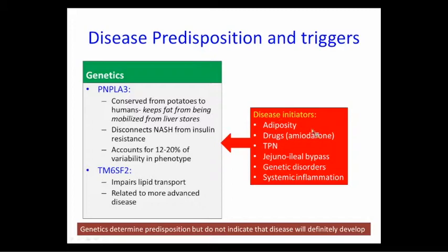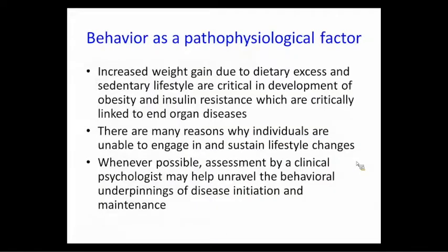Just because you have one of these mutations doesn't mean you'll get NASH — it just lowers your threshold. You still need some kind of disease initiator, whether it's the bad behavior and increasing body weight, or other causes like drugs, TPN, jejunoileal bypass, genetic disorders, or systemic inflammation.